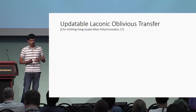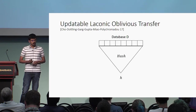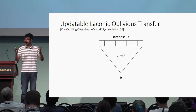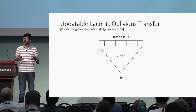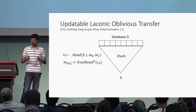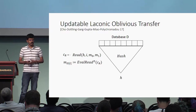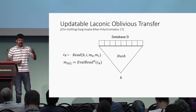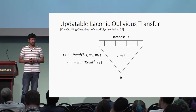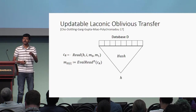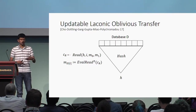Updatable laconic oblivious transfer was introduced by Cho et al. in 2017 and consists of three main algorithms. The first is a hash algorithm that takes in a large database D and hashes it into a small digest H — think of this hash as a Merkle hash. The second is a read algorithm that takes in this hash value H, an index I of the database, and two messages M0 and M1, and outputs a read ciphertext CR. This comes with an evaluation-read algorithm that has read-write access to the database; it takes in CR and outputs the message corresponding to the bit at location I — if the bit is 0 one obtains M0, otherwise M1. This is similar to OT, which is why it's called laconic OT.